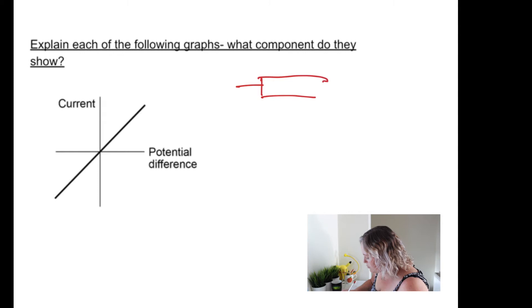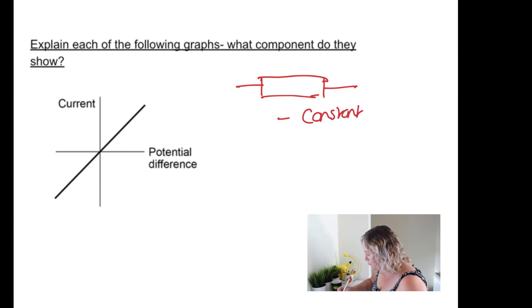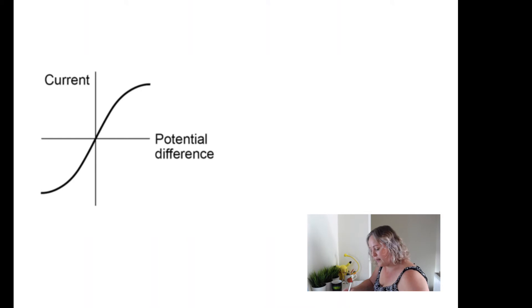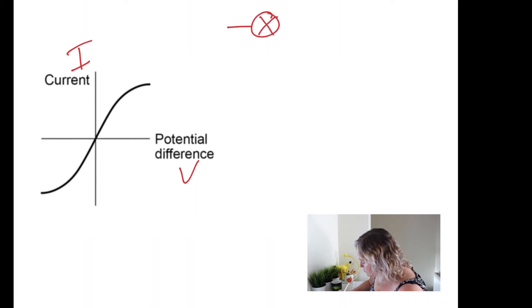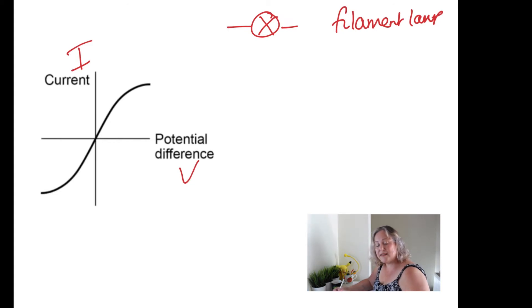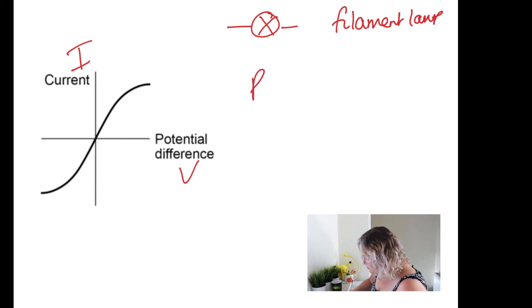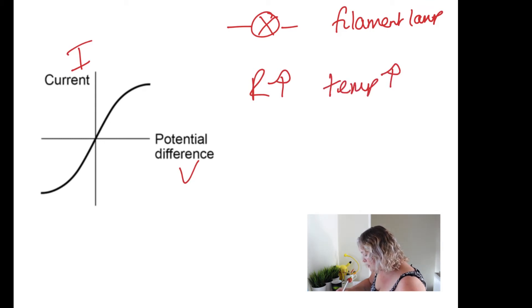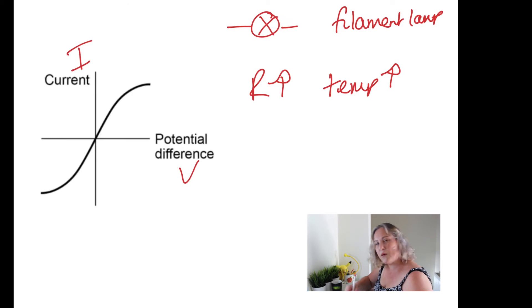Let's go through a few more components. The first was an Ohmic resistor — an Ohmic conductor — and you need to know this graph shape: a straight line, kept at constant temperature. The next graph shape you need to know is for a filament lamp. A filament lamp is different to a resistor because the temperature increases — if you've ever touched a bulb that's been on for a while, it's hot. As the temperature increases, the resistance increases, giving us this curved graph shape.